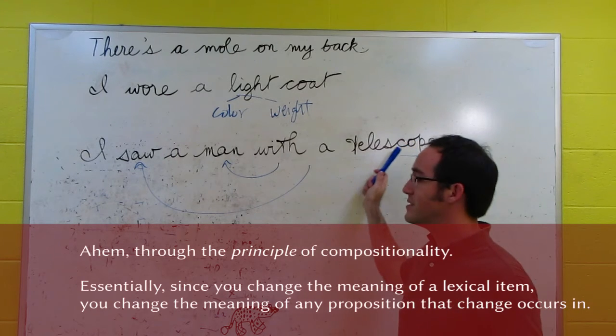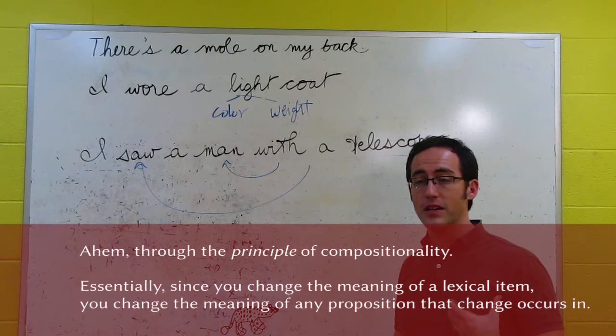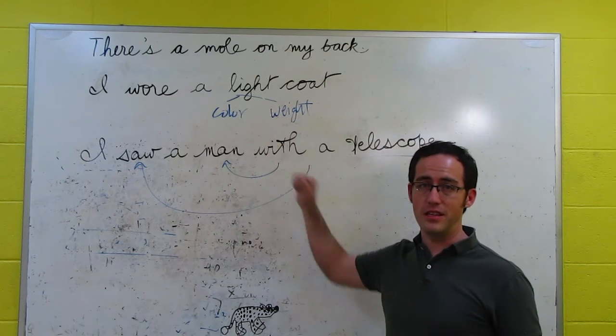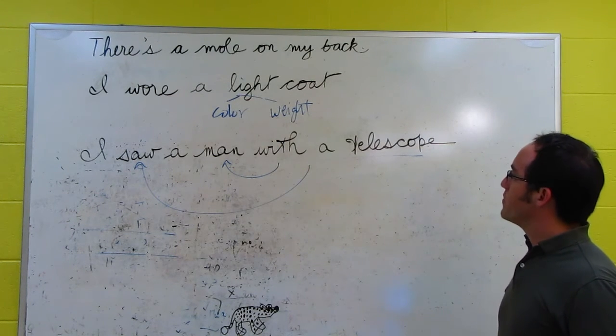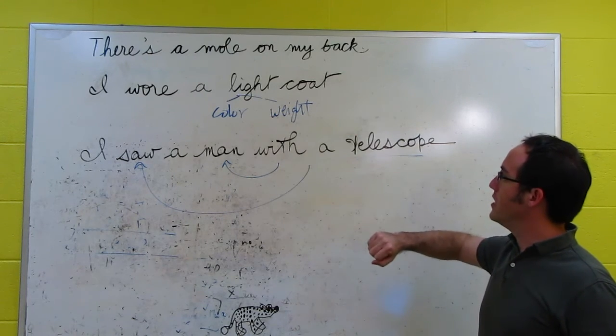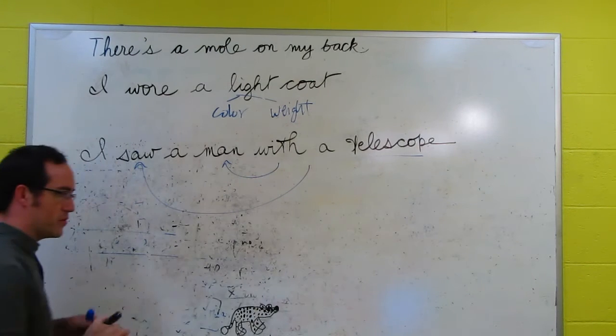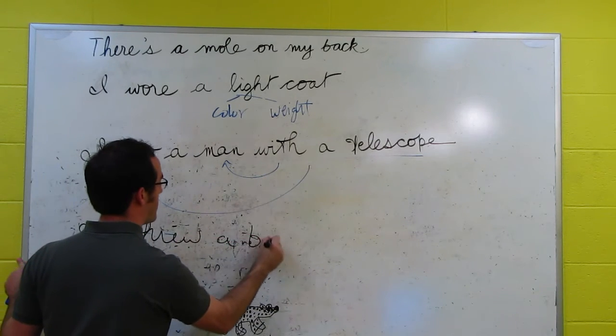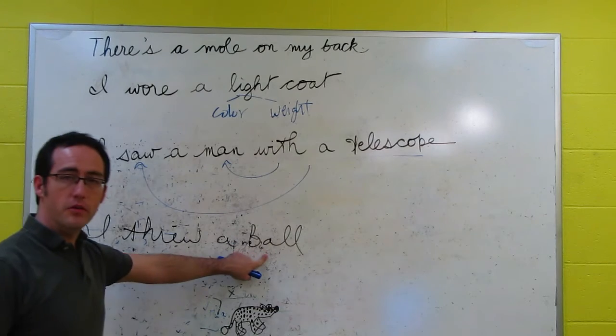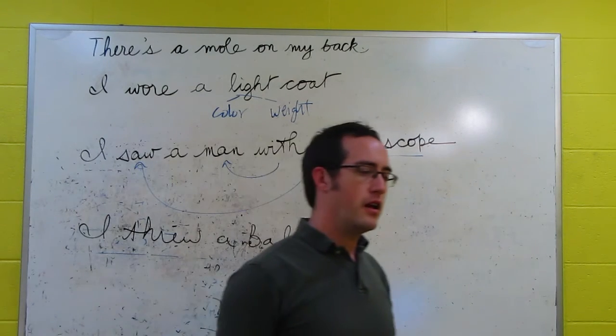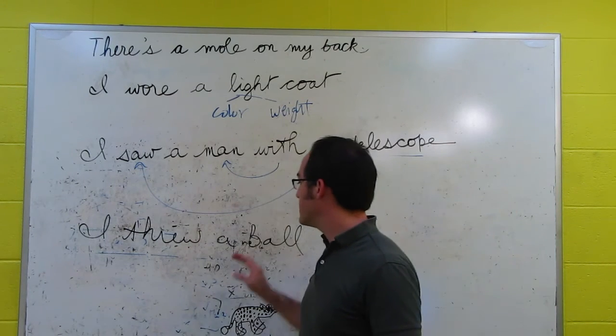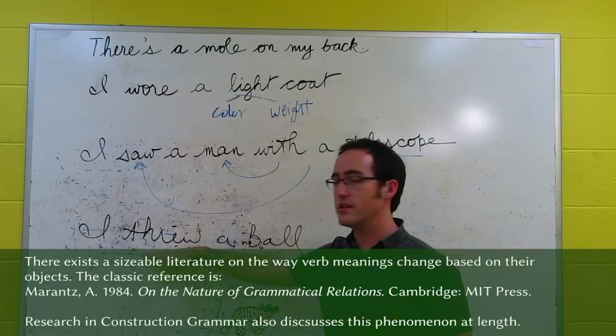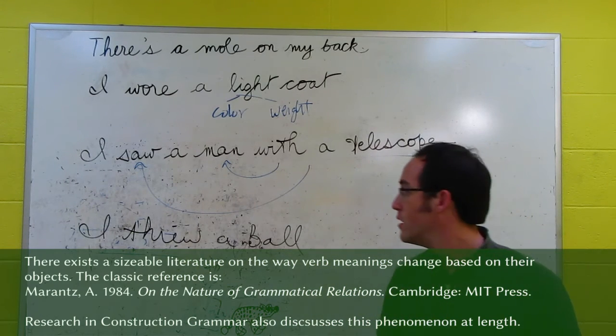And so, what this tells us then is that the semantics, the semantic interpretation of an expression depends on the syntactic information that feeds it. And so, we get these different kinds of meanings. Now, there's another kind of ambiguity that comes, again, with arguments. If you say, I threw a ball, the word ball is ambiguous between the little round object and a dance. But, depending on which one you have, it will affect the meaning of the verb throw. So now, the verb throw is also ambiguous depending on its arguments.